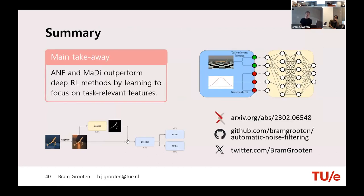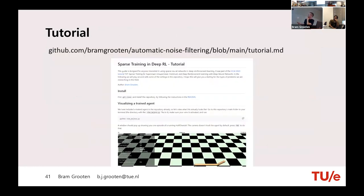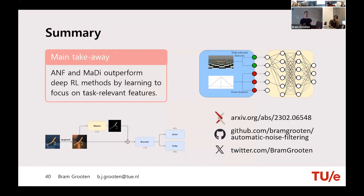Main takeaway: ANF and MaDi outperform standard deep RL methods by learning to focus on task-relevant features. The ANF paper is on arXiv and there's a GitHub link with a sparse training tutorial if you're interested in doing this kind of work.